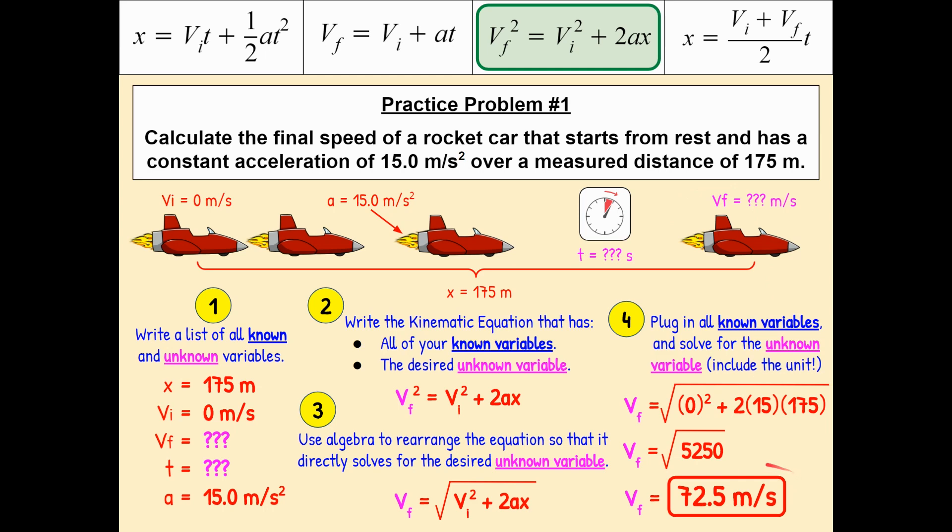The last thing you would typically want to do is think about, is my answer reasonable? Is this an answer that makes sense? Now since our speed started at zero, and every second we were gaining 15 meters per second squared, it kind of makes sense that, after a few seconds, it would build up from zero speed to 15 to 30 to 45, and eventually we'd make our way up to some number hovering around 72.5 meters per second. So yes, I'd say that's a reasonable number.